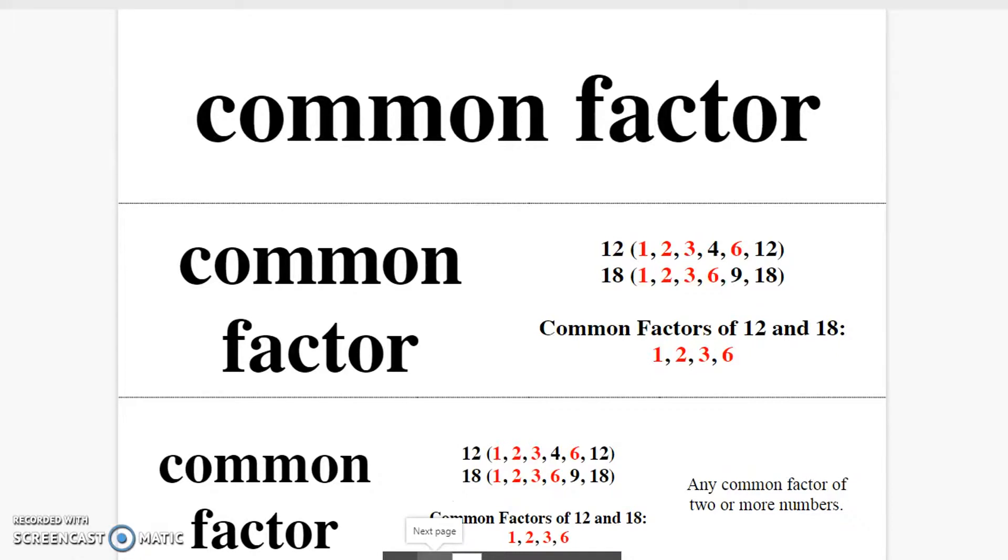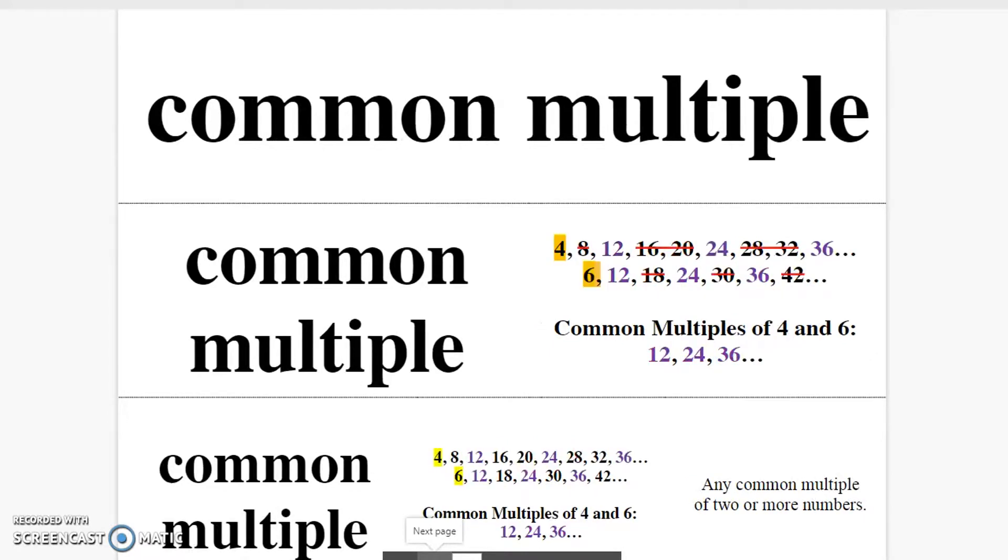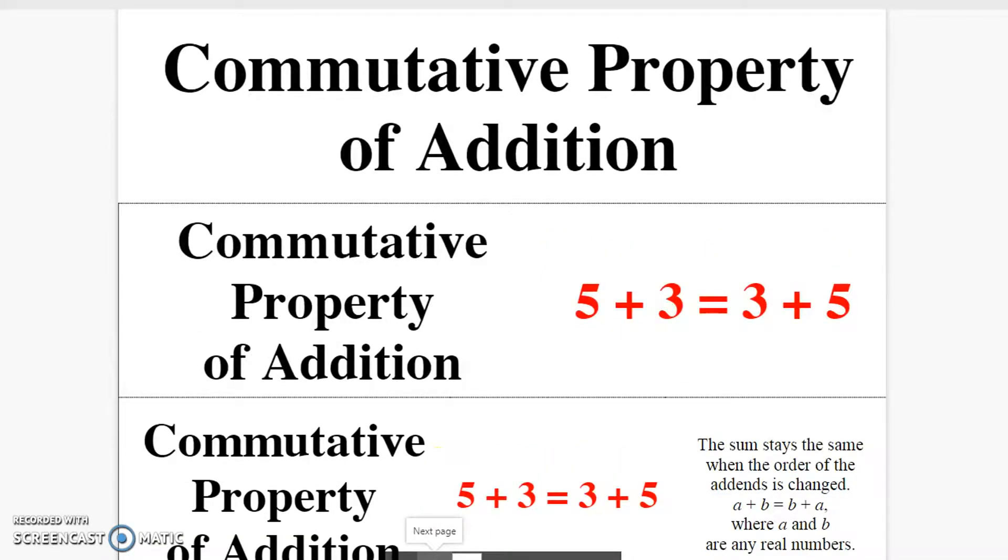Common factor. A number that is a factor of two or more numbers. Common multiple. A number that is a multiple of two or more numbers. Commutative property of addition. The sum stays the same when the order of the numbers added is changed.